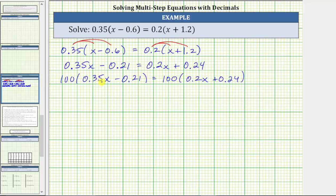100 times 0.35x is 35x, minus 100 times 0.21 is 21, equals on the right side.